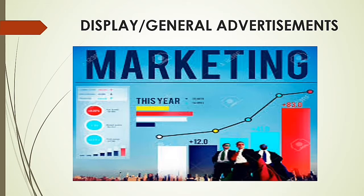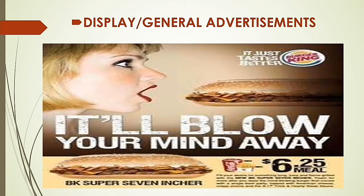Here is an example of a display or general advertisement. The main heading is written in a very big font, with many different font sizes to make it attractive. A lot of colors are used, along with bar graphs, pie charts, slogans, dialogues, and pictures — everything used to make the display advertisement attractive. Another example also shows the price mentioned, a colorful and attractive model with lot of expressions — showing that the advertisement will hold your attention.